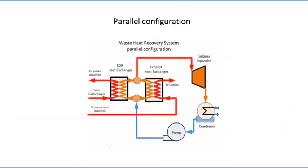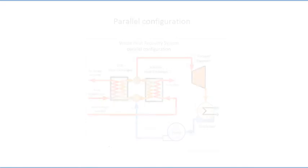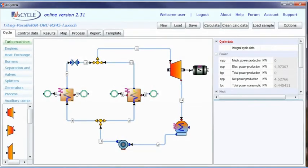In a parallel configuration, the flow after the pump is divided into two parts. One part goes through the exhaust gas recirculation heat exchanger, and the other goes through the exhaust heat exchanger, then they are mixed. Taking into account that most working fluids have a maximum allowable temperature below that of exhaust gases, working fluids in both exchangers must be heated to the same temperature to gain maximum efficiency. This requires special means for flow rate control.